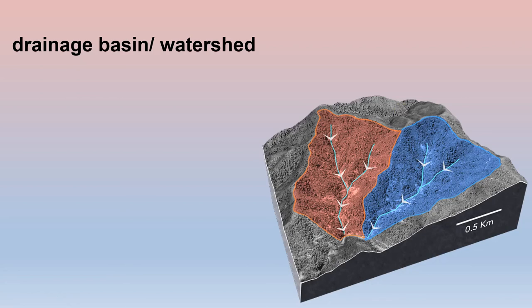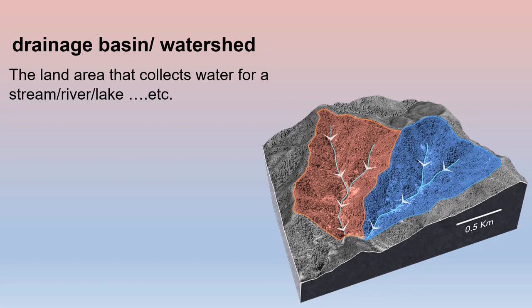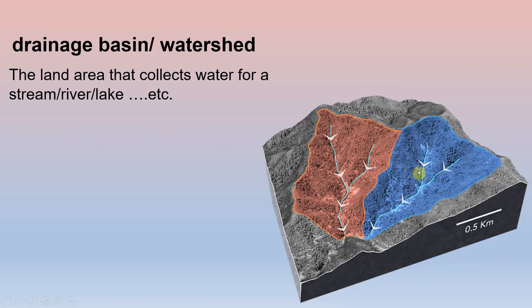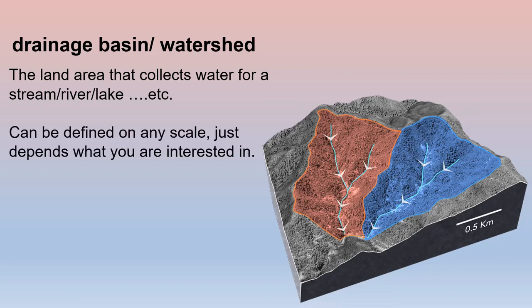Another important term is drainage basin — drainage basin and watershed are completely interchangeable terms. They refer to the land area that collects water for a given stream, river, lake, or ocean. Looking at our diagram, the red area is separated from the blue area by a topographic high spot — a hill. If you are a drop of water and you land in the red area, you become part of that stream's drainage basin or watershed; if you fall into the blue area, you become part of that stream's drainage basin. Drainage basins can be defined on any scale.